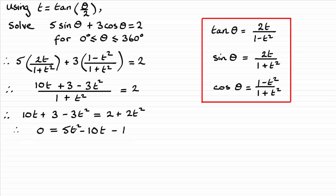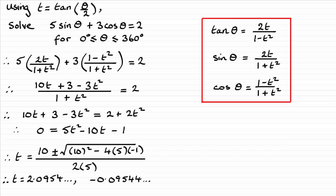Doing that I end up with this result: 0 equals 5t squared minus 10t minus 1. Now normally I'll try and see if this factorizes, but it doesn't. So I'm going to have to turn to the quadratic formula to work out what t is. So if you use the quadratic formula you should end up with this, and working this out you end up with these two results: t equaling 2.0954 when we take the positive option here, and when you take the negative option we end up with minus 0.09544 and so on.